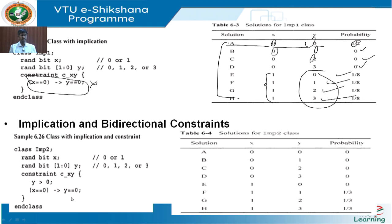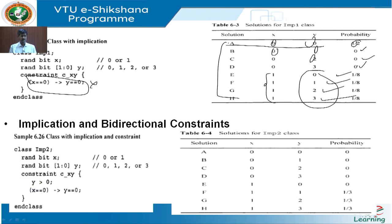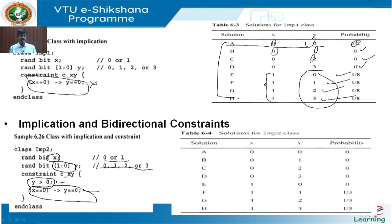This is a simple implication operator example. I have two variables x and y, both are rand variables with two bits, so the value goes from zero to three. I am putting a constraint: one is y forwarding to zero, and the other is the implication operator. This is the implication constraint, and this is the bi-directional constraint.